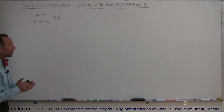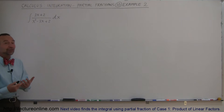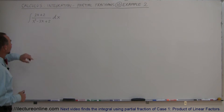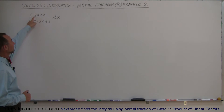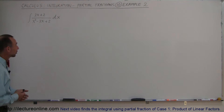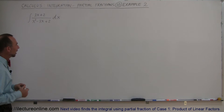Welcome to our lecture online. Here's our second example of how we use the partial fraction technique to do some integration. If you look at this integral, notice that in order to integrate it, we would need what we call the differential, which would be 2x minus 3 dx. Since we don't have 2x minus 3 dx in the numerator, it doesn't look like we can integrate it directly. So maybe we can do it by using partial fractions.